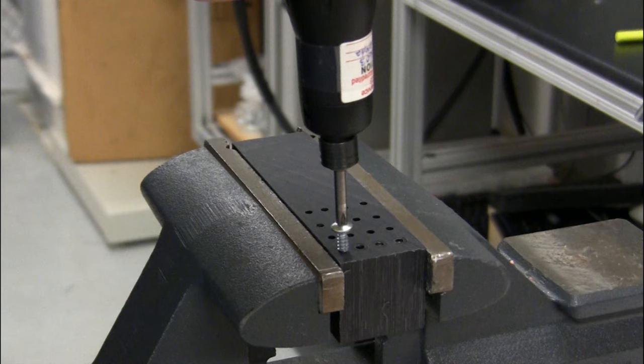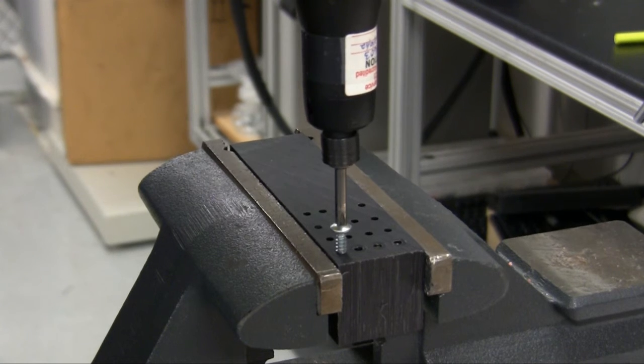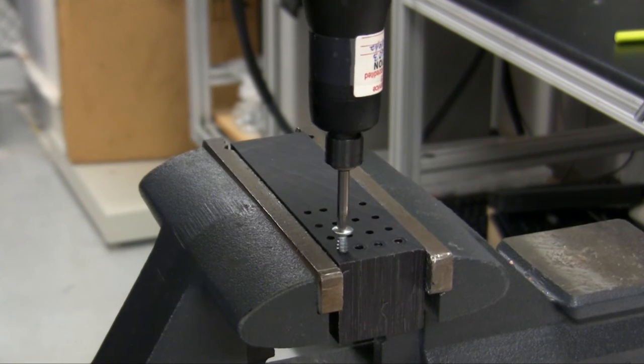In this example, we have screws being driven into a plastic test block. There are two different sizes of screws, but both have similar torque and angle characteristics.